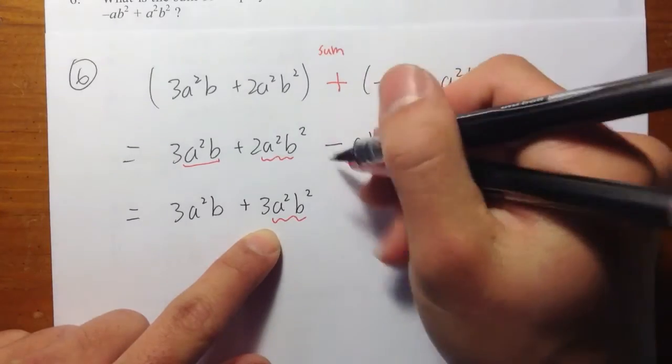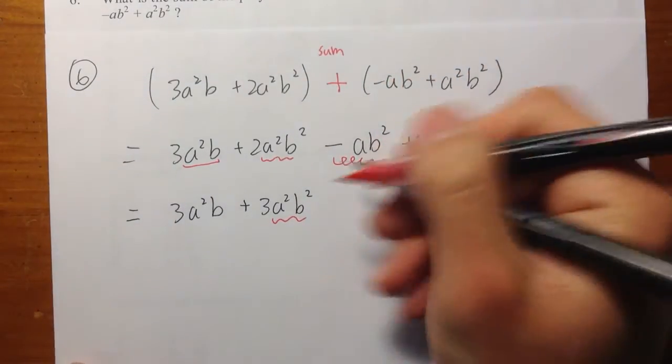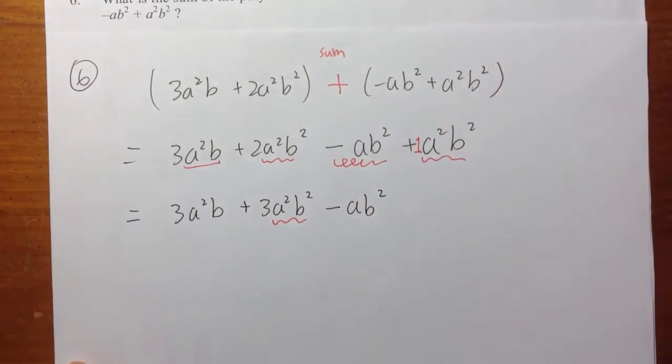And then again, this term will be by itself. So let me write this like this. Bring this down. Negative a, b².